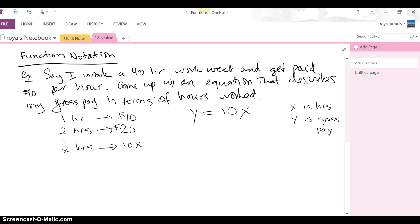Now function notation takes this equation in terms of x and y and makes this y be called something else. We take this y and we call it f of x. Because it is the dependent variable, it actually depends on what the x is. So y is going to be the dependent variable. Let's do that in another color. And x is going to be the independent variable.